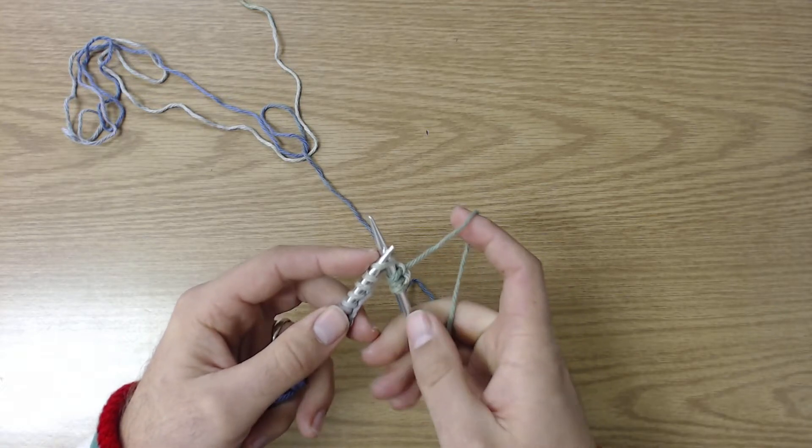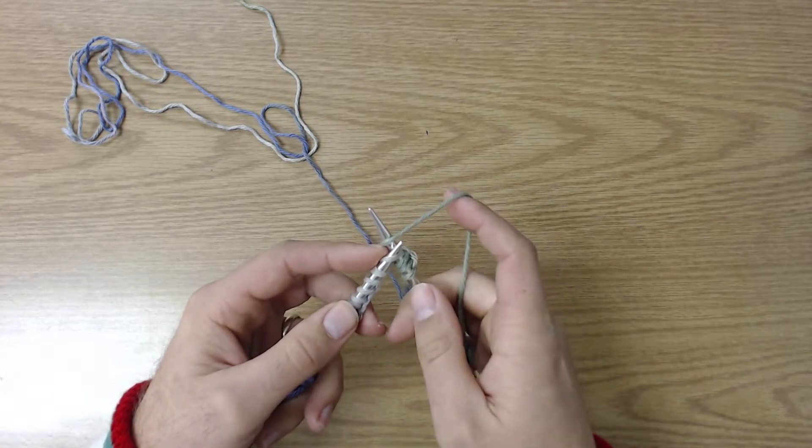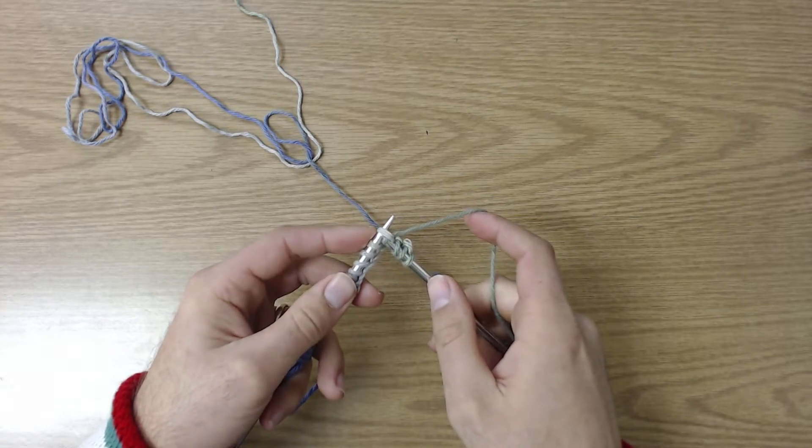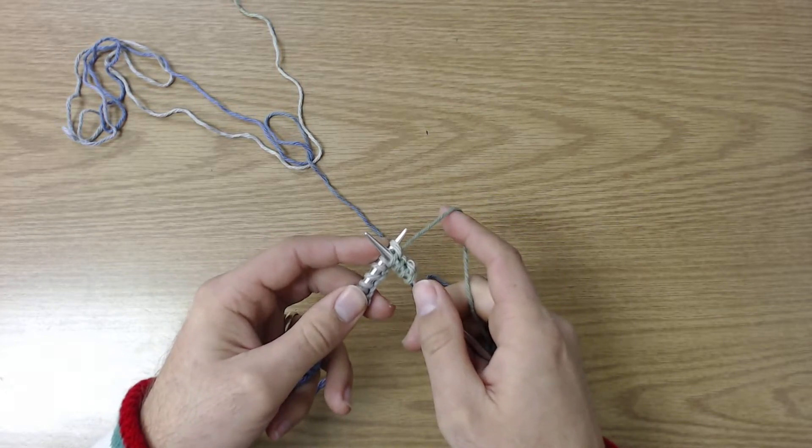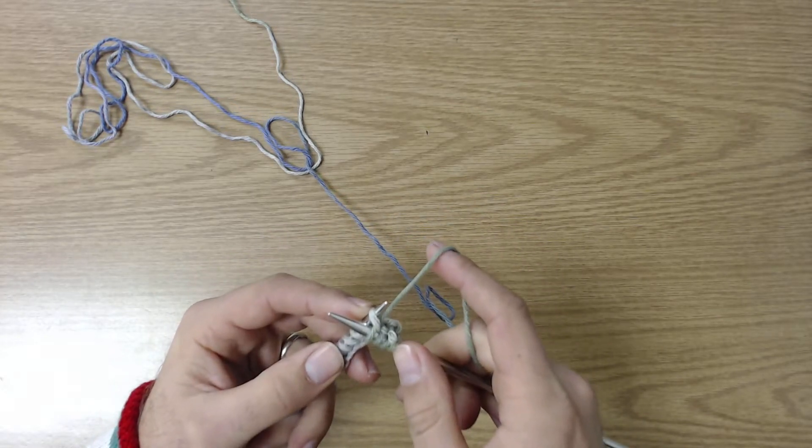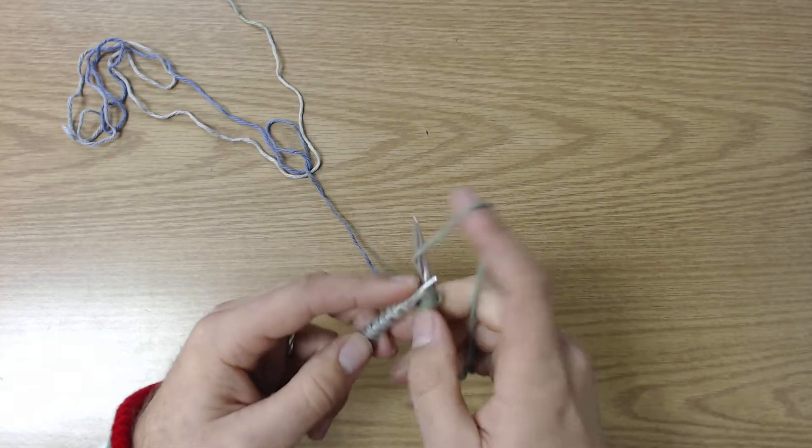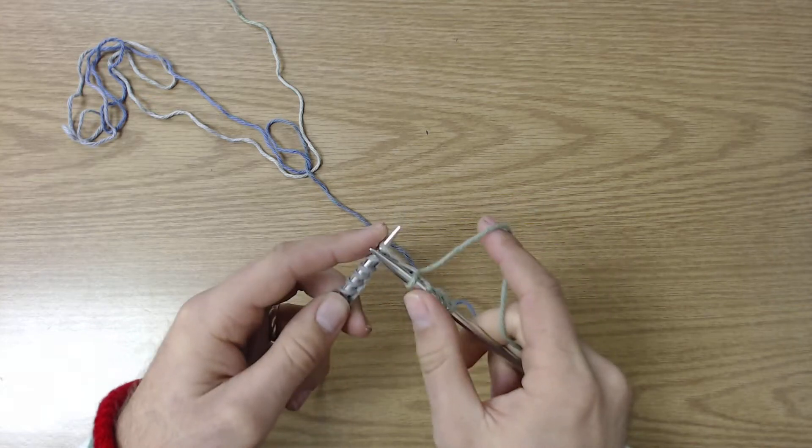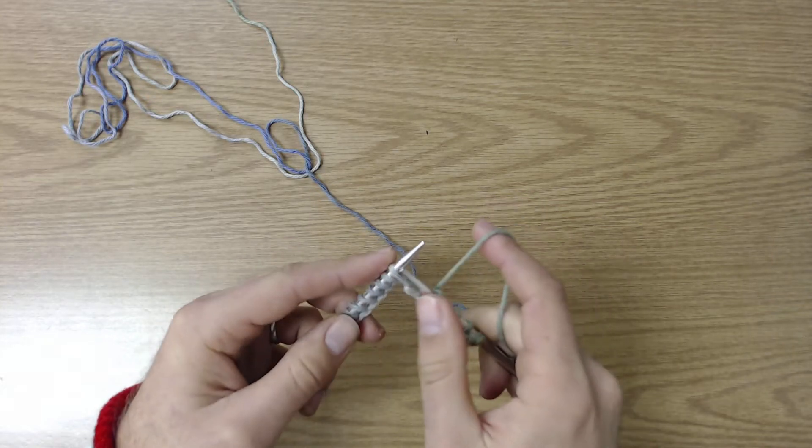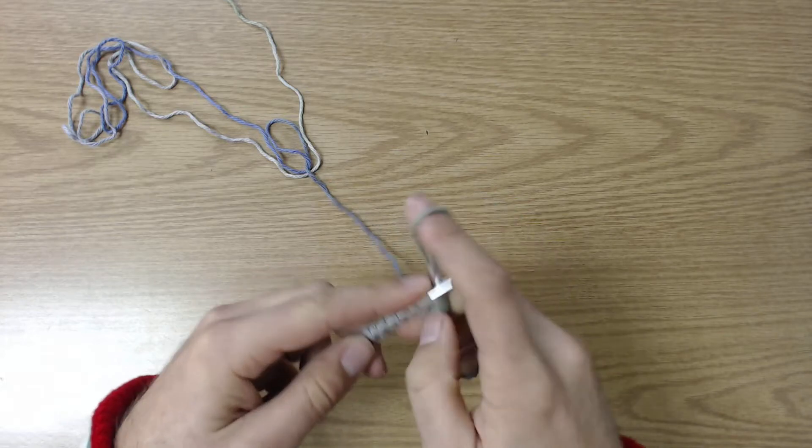Push my right needle through the loop. Wrap the yarn around. Tuck that under that old loop. And then kick that loop off of my left needle. Do that for the entire row.